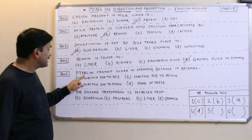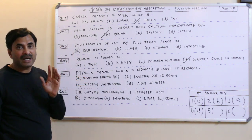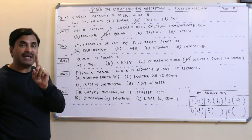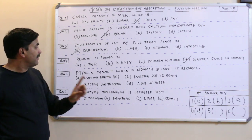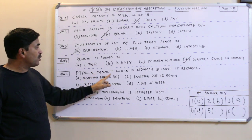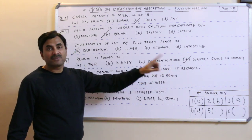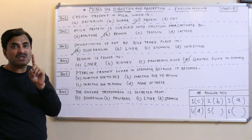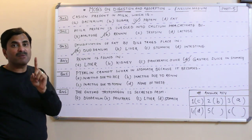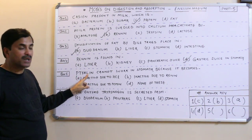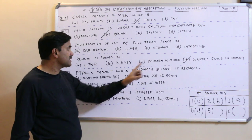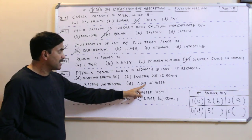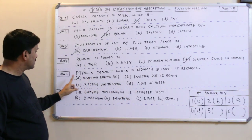Question number five: ptyalin, also called salivary amylase, is found in saliva and works at a pH of 6.8, which is slightly acidic. The question is: ptyalin cannot work in the stomach because it becomes — inactive due to HCl, inactive due to renin, or inactive due to pepsin? The HCl present in the stomach brings the pH down to 1.5–2, so the enzyme cannot work. Ptyalin becomes inactive due to HCl. Question five has the answer: inactive due to HCl.